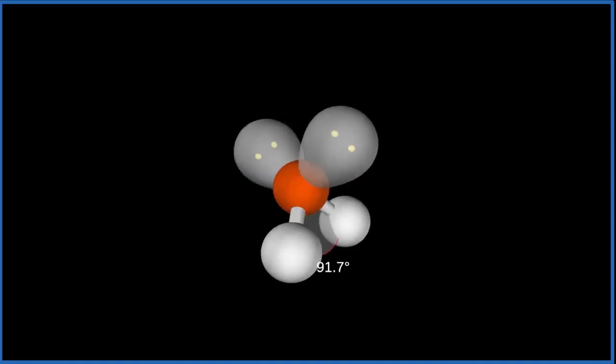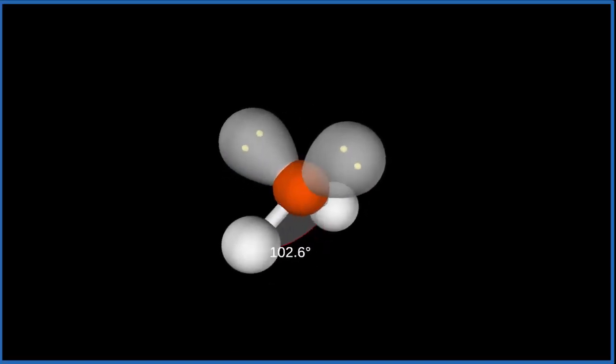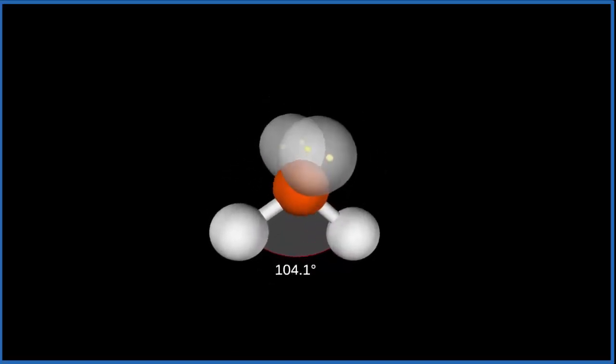Since these two on top are repelling a little bit more, that pushes the two hydrogen atoms down here closer together. That's why we have a bond angle instead of the 109.5, the ideal angle, we end up with 104.5.